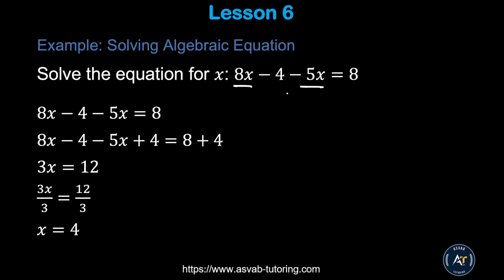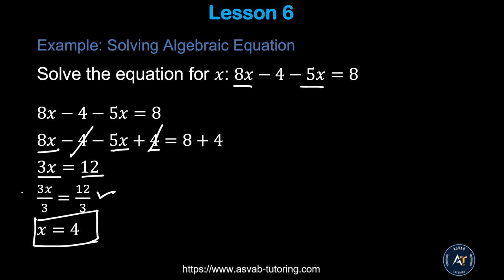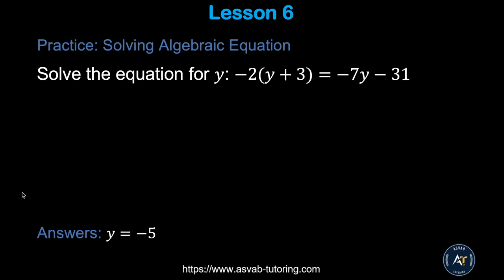For an equation with multiple variable terms like 8x − 5x − 4 = 8: first simplify by combining like terms — 8x − 5x = 3x — giving 3x − 4 = 8. Then add 4 to both sides (the opposite operation to eliminate the constant): 3x = 12. Divide both sides by 3, giving x = 4.